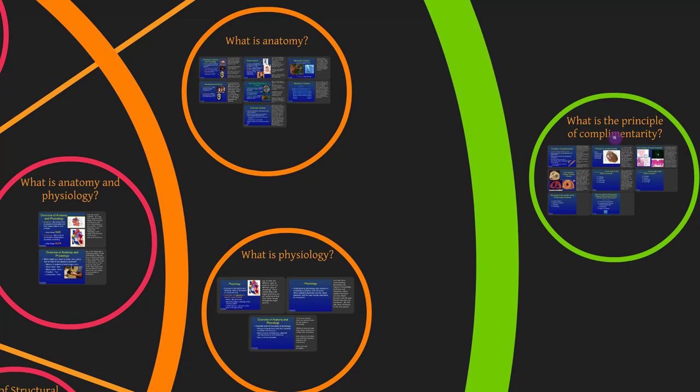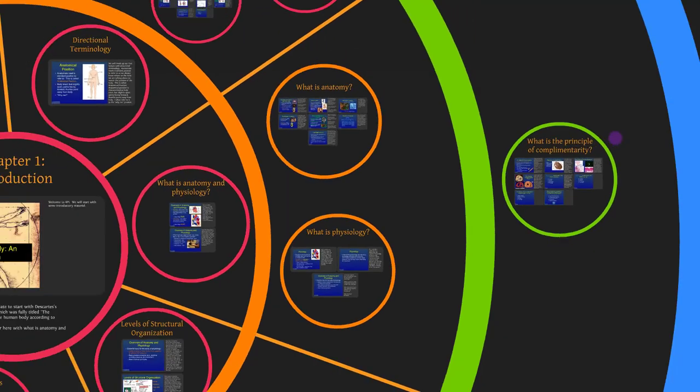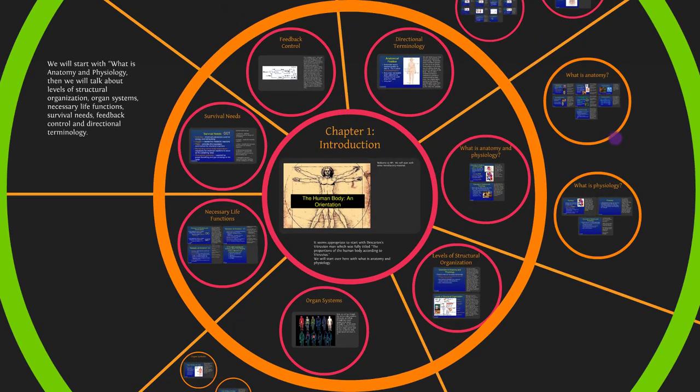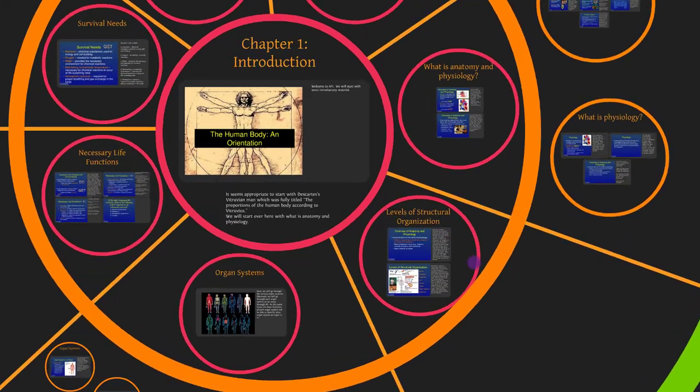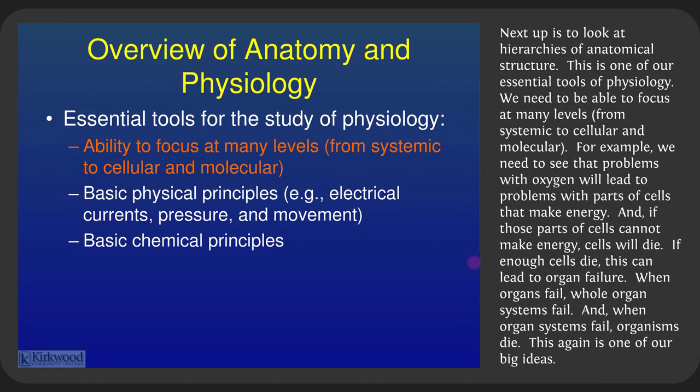Now we move to levels of structural organization — looking at hierarchies of anatomical structure. We need to be able to focus at many levels from systemic to cellular to molecular. For example, problems with oxygen (a molecule) lead to problems with mitochondria (the organelles that make energy). If mitochondria can't make energy, cells die; if enough cells die, organ failure follows; organ failure leads to organ system failure; and when organ systems fail, organisms die.